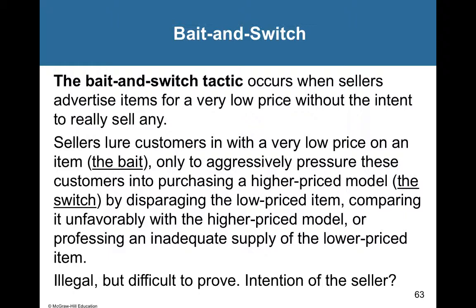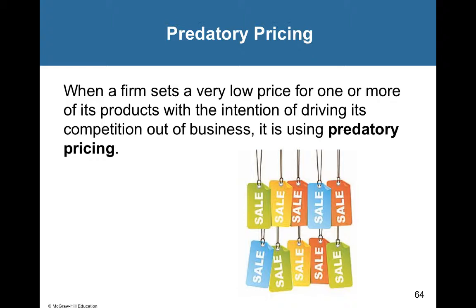Predatory pricing is where a firm sets a price very low on one or more products with the intention of driving competition out of business. For example, if a new internet company sells high-speed internet for $1 a month — well below cost — it would cut out Charter, Comcast, and others, forcing them out of the industry as everyone switches. That's predatory pricing.